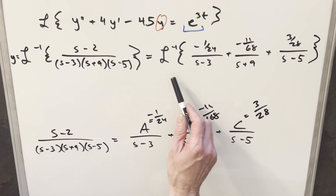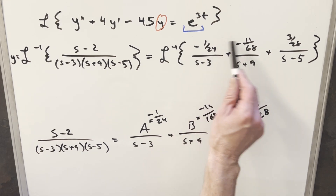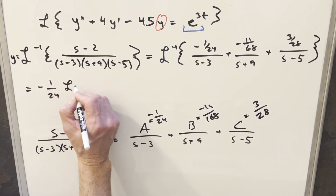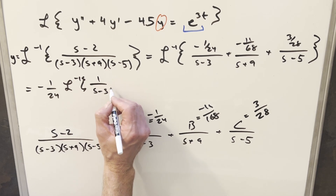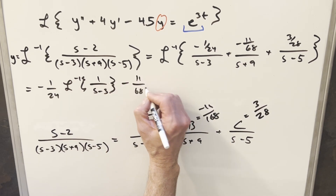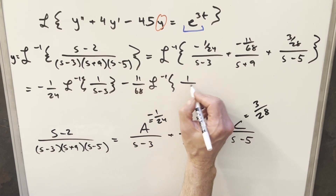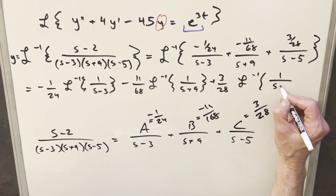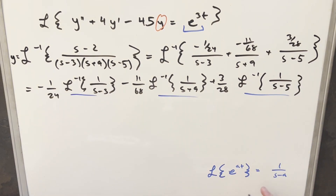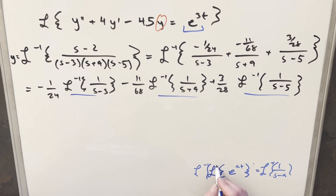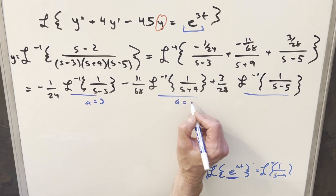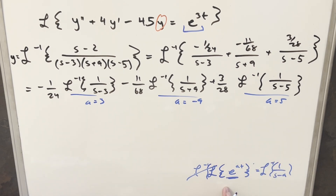Now I want to split this up into three different inverse Laplace transforms and factor out the constants. So we pull out negative 1 over 24 and take the inverse Laplace of 1 over s minus 3. Then pull out negative 11 over 168 and take the inverse Laplace of 1 over s plus 9. Then pull out 3 over 28 and take the inverse Laplace of 1 over s minus 5. For each of these, we use the formula in reverse: the inverse Laplace of 1 over s minus a is e to the at. So a equals 3 for the first, negative 9 for the second, and 5 for the third.